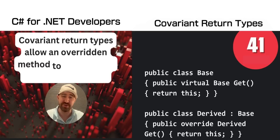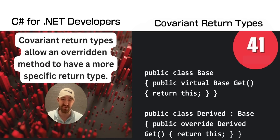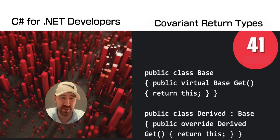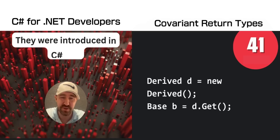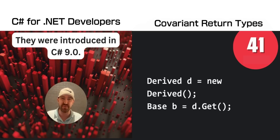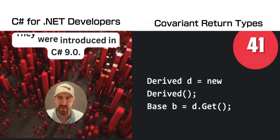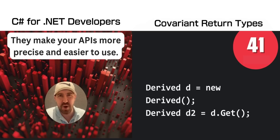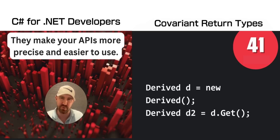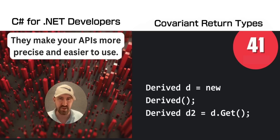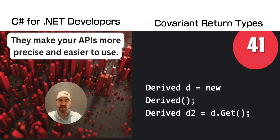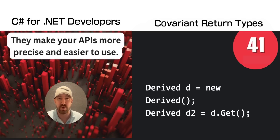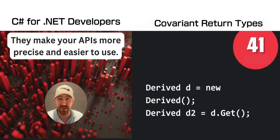The covariant return type pattern allows you to have an overridden method returning a more specific return type. These were introduced in C# 9.0, so you might not see this in older code bases. This is a somewhat contrived example, but in theory it should make your APIs more precise and easier to use.